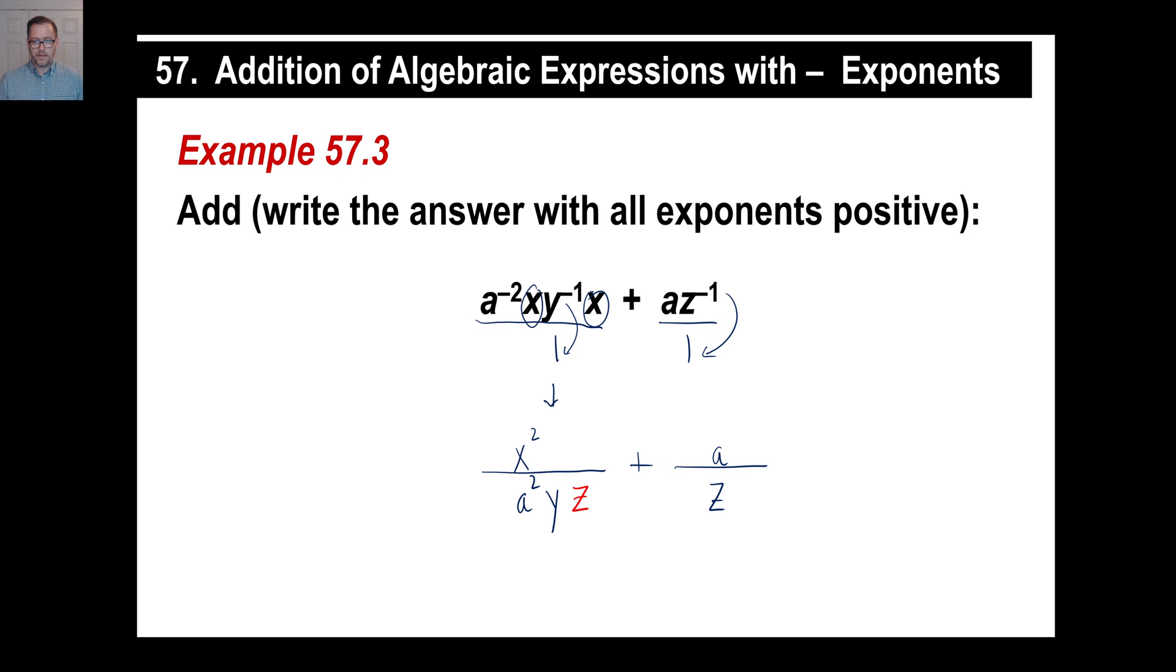So we'll multiply by that and then we'll do the same thing to the top. Over here, we're missing A² and Y. So we're going to multiply by A² and Y.